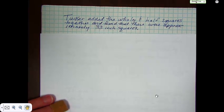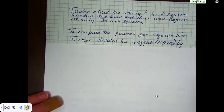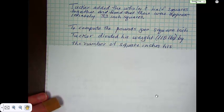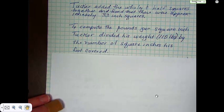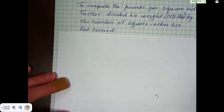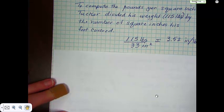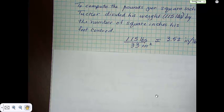So he took his weight which was 115 pounds and he divided it by the number of square inches his foot covered. And that comes up with, if you do the division, 115 pounds divided by 33 inches equals 3.52 pounds per inch. So for every inch of his foot that was on that scale, that scale was supporting 3.52 pounds.